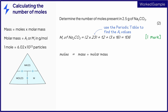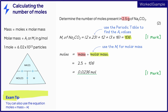Write down the equation that you need to use. The mass is given in the question. Remember that the mass needs to be in grams, which it is in this question, but in other questions you may need to convert the mass to grams. We can use the value of the relative formula mass for the molar mass that we have just calculated. Then substitute the numbers in and calculate the final answer. Remember, you can replace the term molar mass with the relative formula mass in the equation to calculate moles.